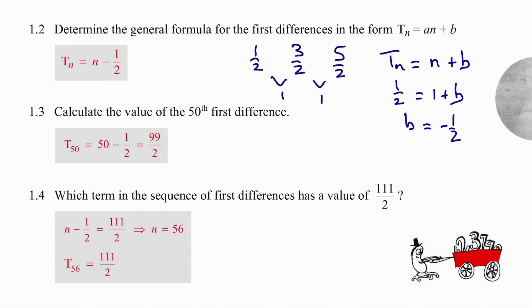We can use that formula to work out the value of the 50th first difference by simply substituting 50 into the position of n. So our value will be 99 over 2, or if you prefer, 49.5.